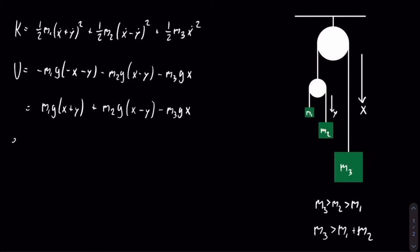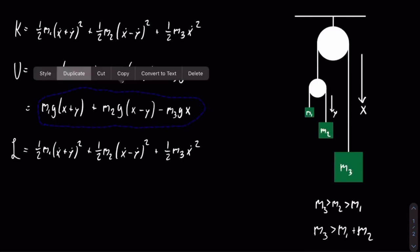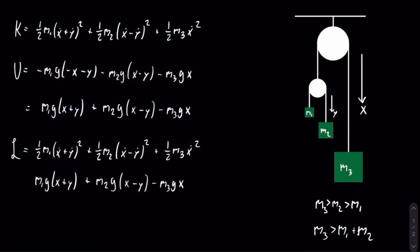Now we have everything we need to form the Lagrangian, which is equal to the kinetic energy minus the potential energy. I'll copy the kinetic energy and paste it, then copy the potential energy and paste it, replacing positives with negatives and negatives with positives. And this is the Lagrangian. Now we just need to take derivatives to arrive at the differential equations.